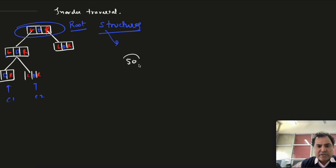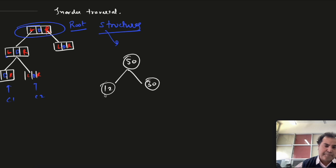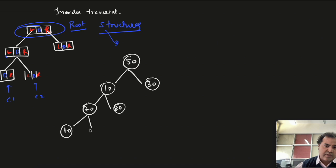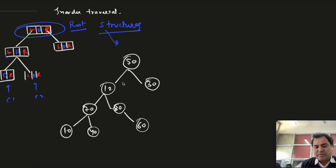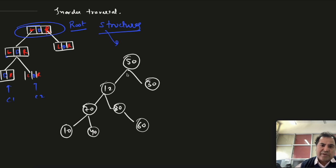So let me take a tree with values: 50, 12, 30, 70, 80, 10, 40, and 60. I have not taken any special tree — not a binary search tree — just a tree with two child nodes per node. Usually if a node has two children, it is called a binary tree.